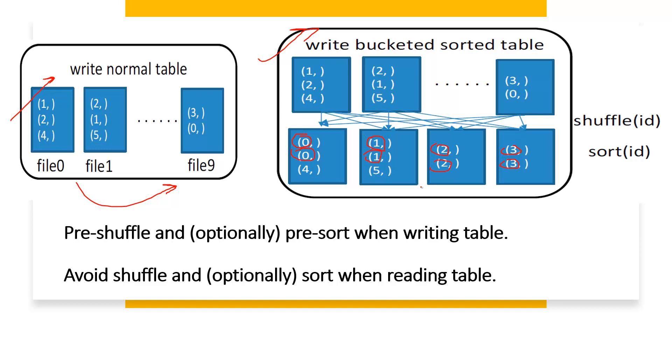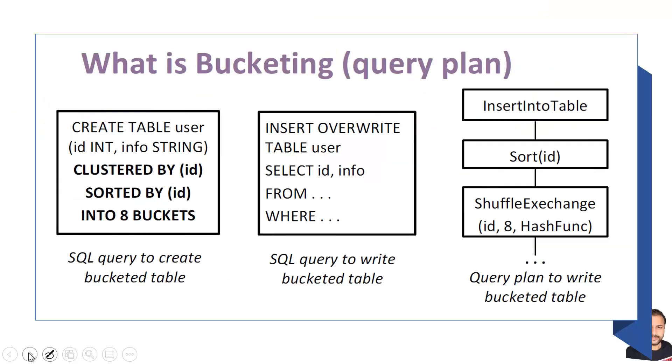If you try to understand the write phenomena or insert into that bucketed Hive table from a query plan perspective, compared to a normal table there would be two more stages in between. One would be your shuffle exchange which will shuffle the data across different buckets based on the number of buckets provided and the bucketed column. Further, the data would be sorted within those buckets.